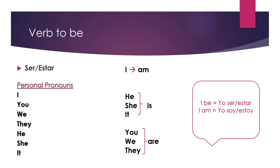If we don't change it, we have sentences like 'I be,' which means 'yo ser, estar,' which is completely wrong. We say 'yo soy, yo estoy.' So remember, the pronoun in the sentence is very important when we use verb to be, and we have to use the correct verb to be for each pronoun.